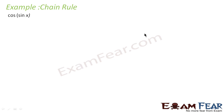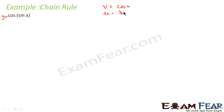Let's take some more examples because chain rule looks a little tricky. Here also, if you see, this is a composite function: cos of sine x. In this case also, we can write y equal to cos of sine x in v and u form. So, my v becomes cos x and u becomes sine x. So, my f of x is nothing but v of u — you take u first and then take v. Since this is a composite function, I can write sine x as t.